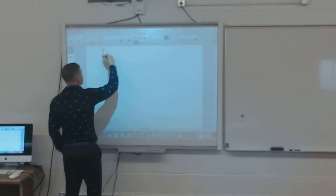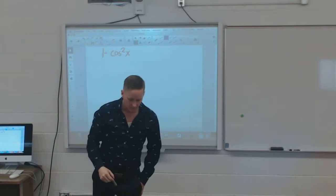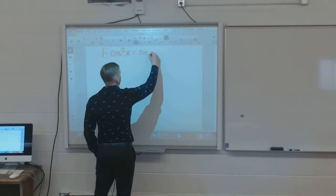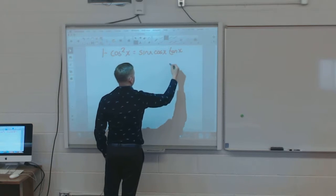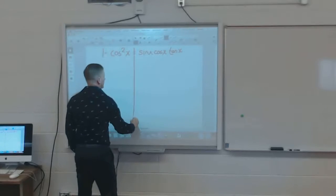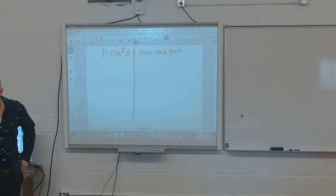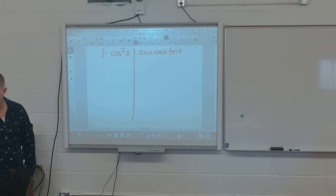So, the first identity is this: one minus cos squared x is equal to sine x, cos x, tan x. So, the first thing I do, write out my equation, and draw a line. You need to follow with me. Are you already there? Okay, so are you okay? Yes. All right, good. Have you done this before? Yeah, you have? Okay, good.